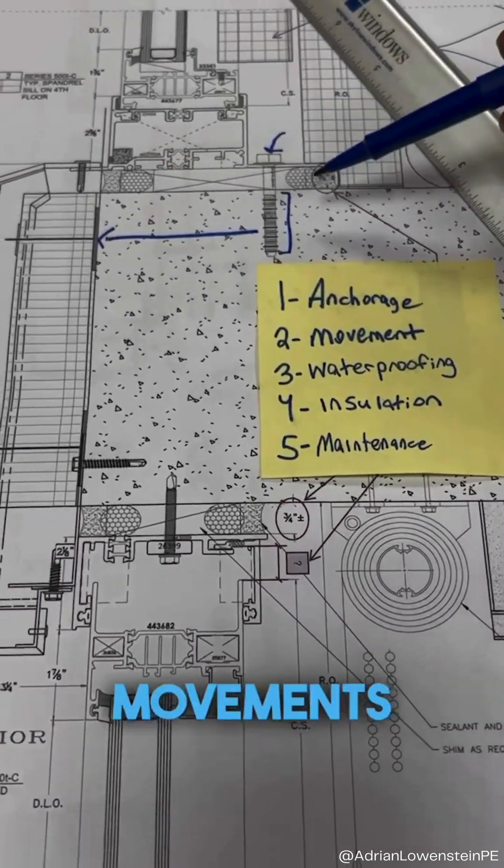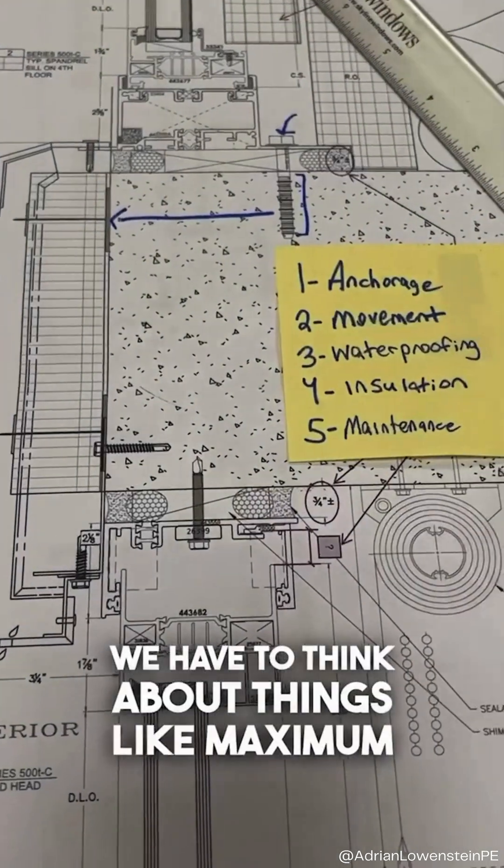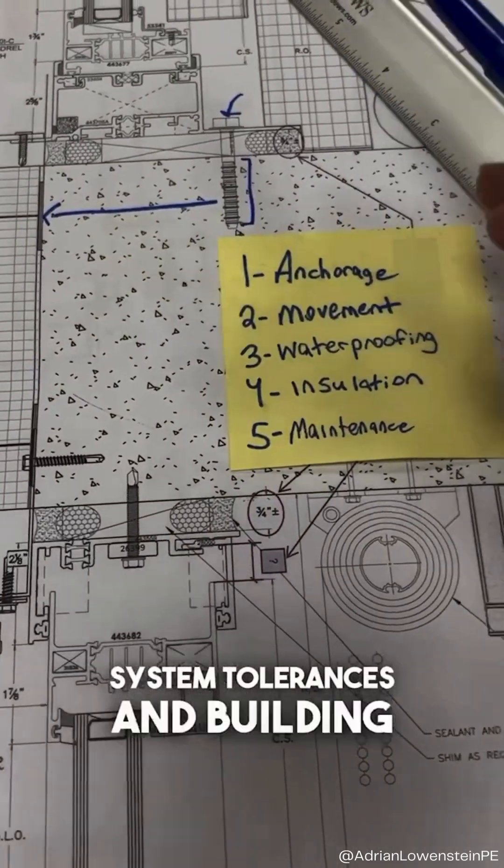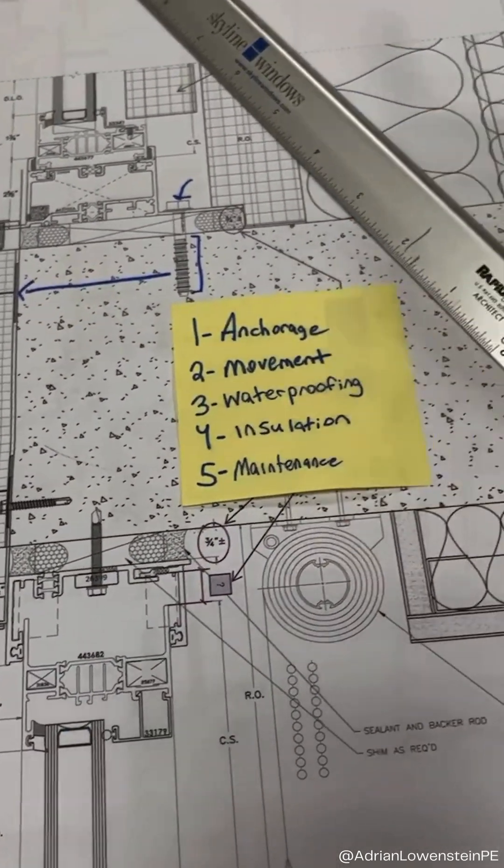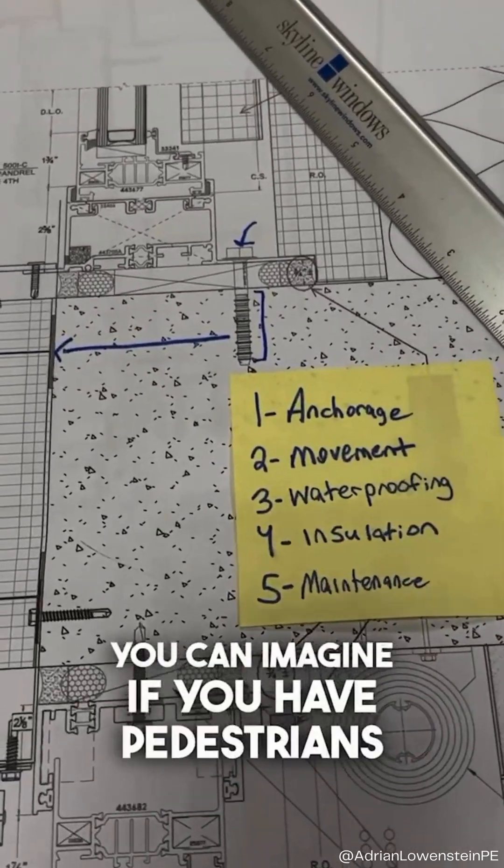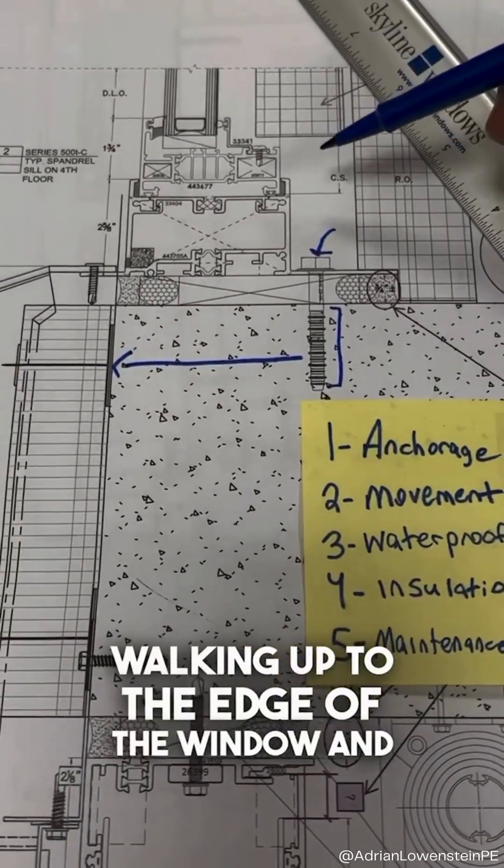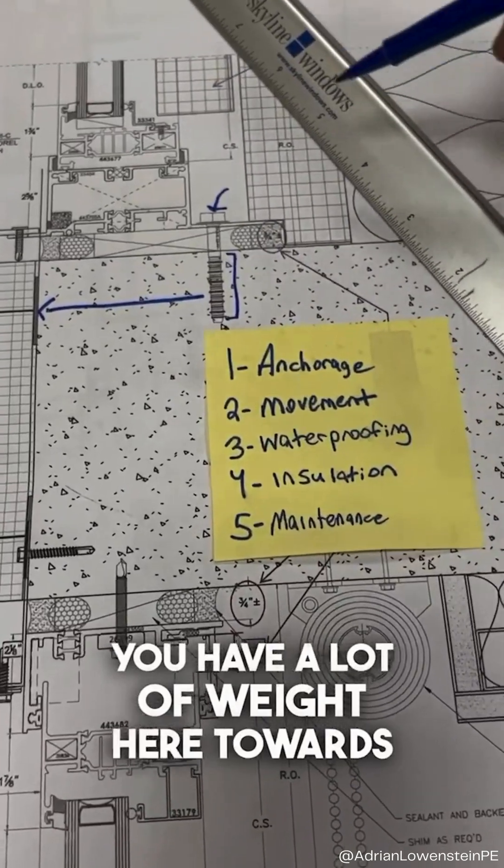Number two, movement. So we have to think about things like maximum system tolerances and building movements. So if you can imagine if you have pedestrians walking up to the edge of the window and you have a lot of weight here towards the edge,